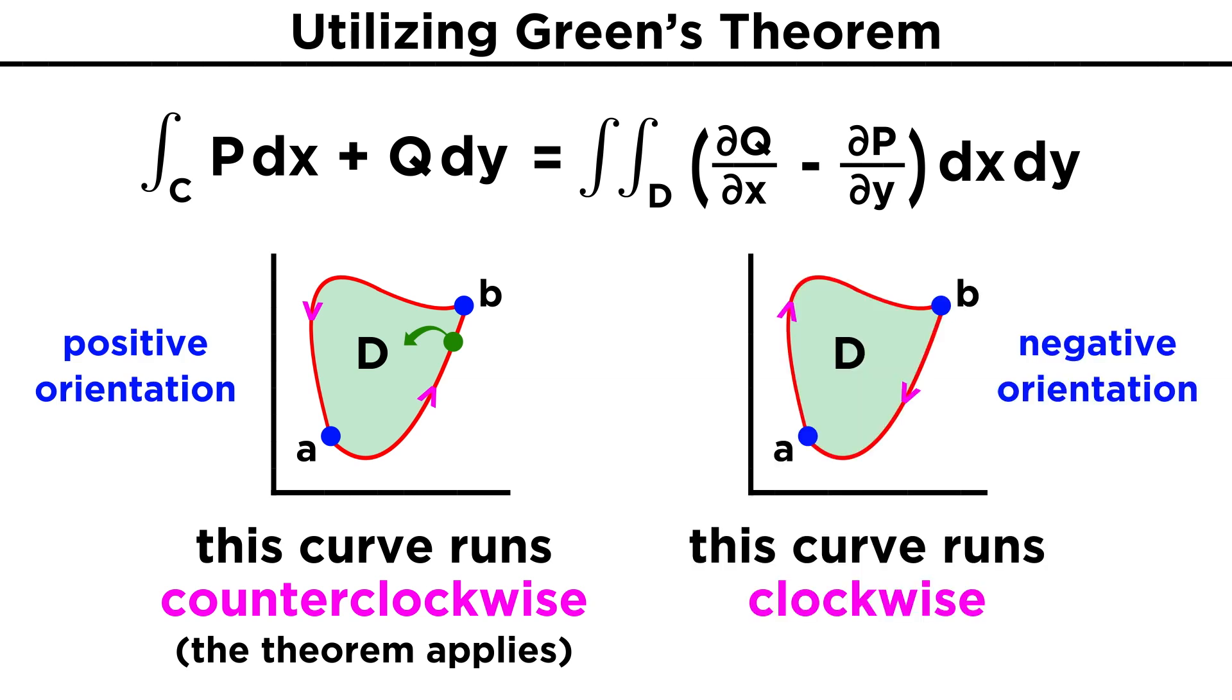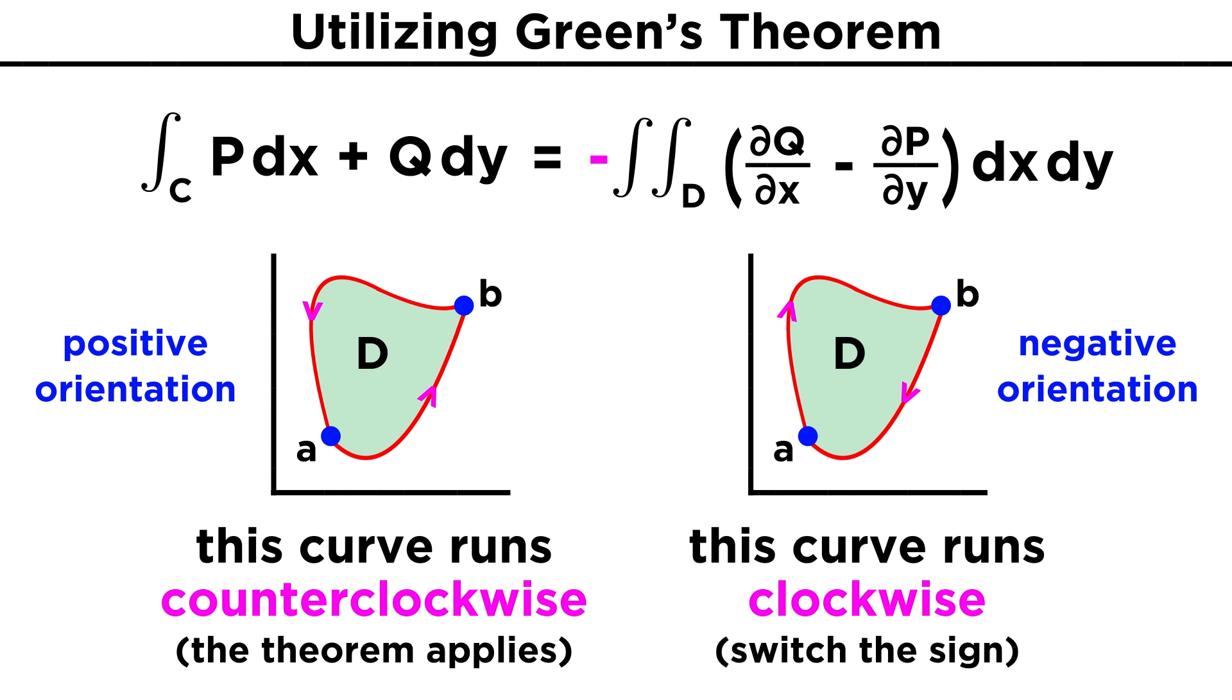For curves that go in a clockwise direction, or negative orientation, Green's Theorem can still be applied, but with a sign change, so the line integral can still be expressed as a double integral just with a negative sign right here out front. It will be important to remember this detail to get correct answers.